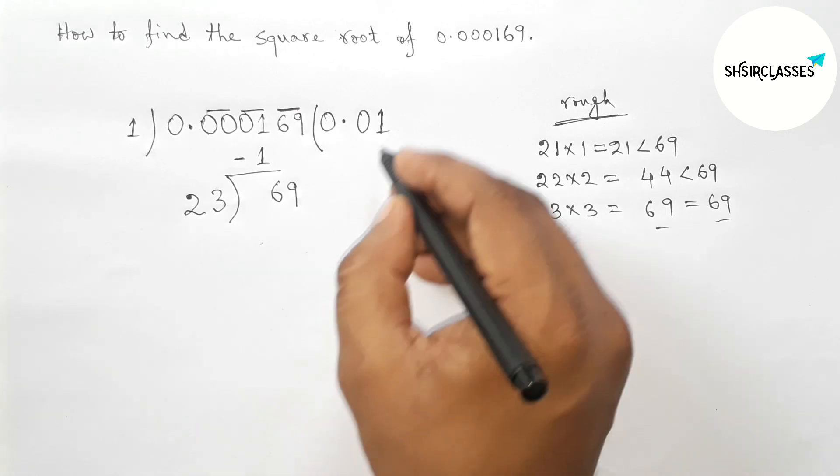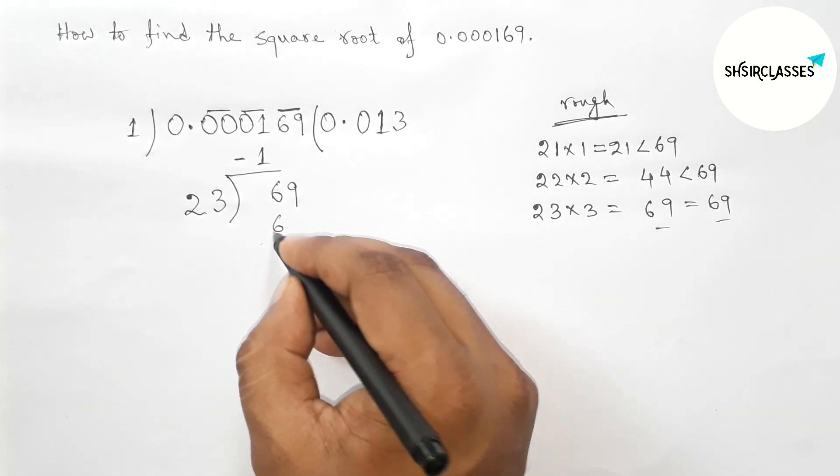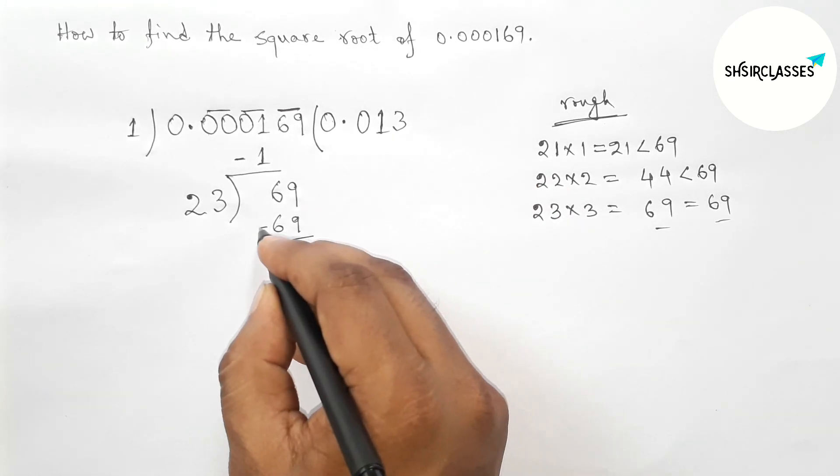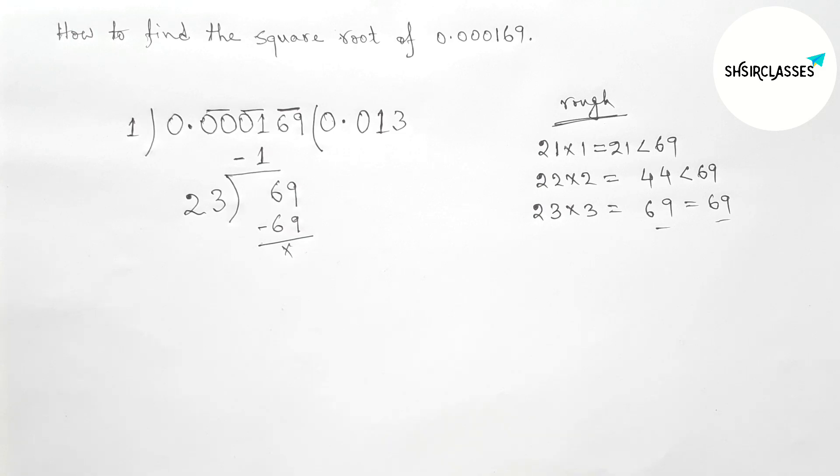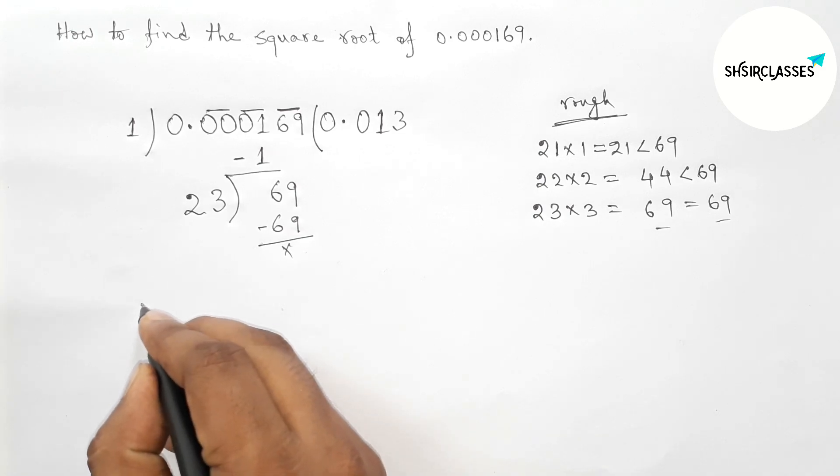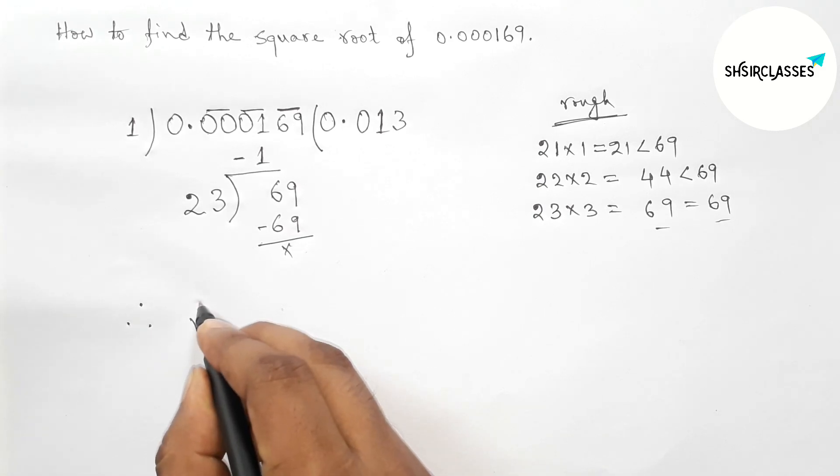So here we have to take 3. So 69 minus 69 here, and the end here. Therefore, the value of square root...